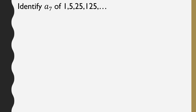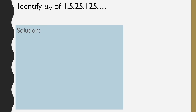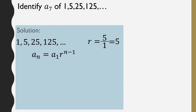For our next example, we are going to identify a sub 7 of the sequence 1, 5, 25, 125, and so on. We start with finding the common ratio: the second term divided by the first term, so 5 divided by 1 is just 5. Next, use the formula and substitute the right values. Since we're finding the 7th term, n is 7, a sub 1 is 1, and R is 5.